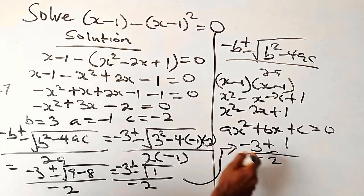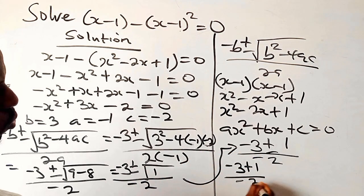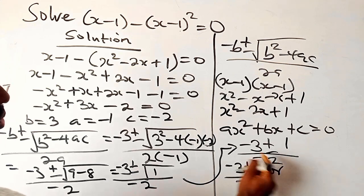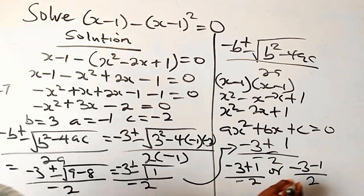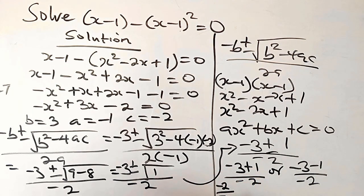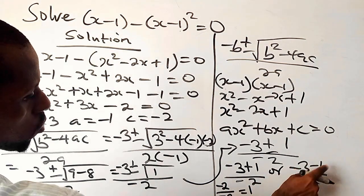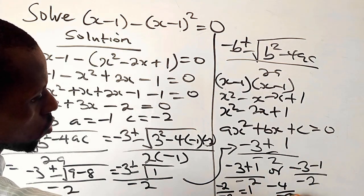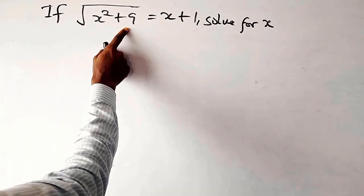So I can write my answer as minus 3 plus 1 over minus 2, or minus 3 minus 1 over minus 2. For minus 3 plus 1, that is minus 2, divided by minus 2, which is 1. And for the second case: minus 3 minus 1 is minus 4, over minus 2, that is 2.